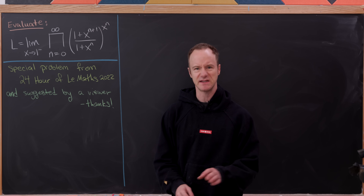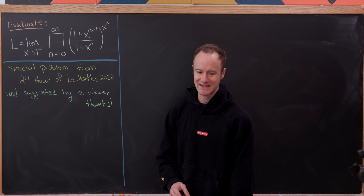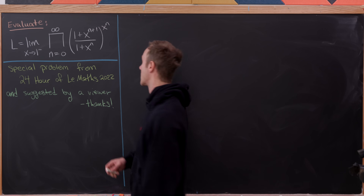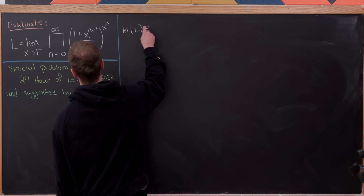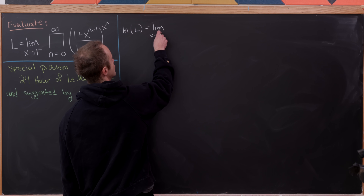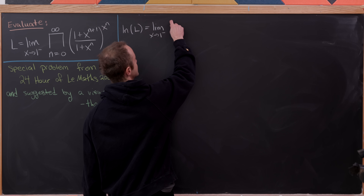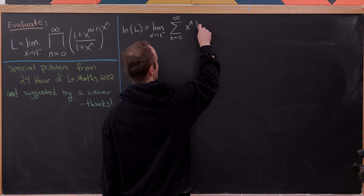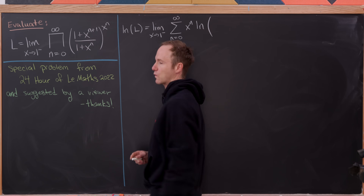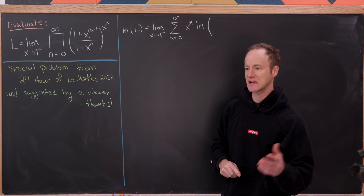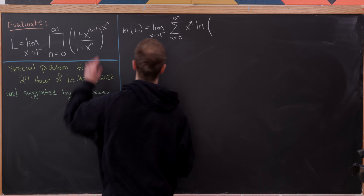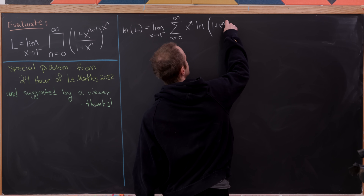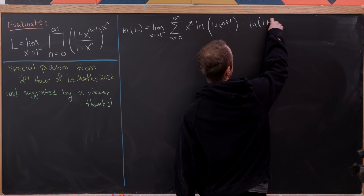Since we've got a product here, and it's easier to work with sums, we're going to take the natural log. The log can be taken inside of the limit because the logarithm is a continuous function. So that gives us ln(L) equal to the limit as x goes to one from below of the sum as n goes from zero to infinity of x^n times the natural log of (1 + x^(n+1)) minus the natural log of (1 + x^n).